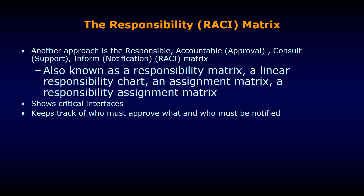The Responsibility Matrix is also known as a Linear Responsibility Chart, an Assignment Matrix, or a Responsibility Assignment Matrix. Basically, it shows the critical interfaces between the project activities and the human resources required to perform these activities. It keeps track of who must approve what and who must be notified. The following matrix example will give you a clearer idea.